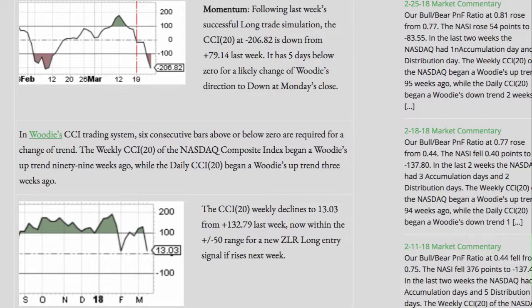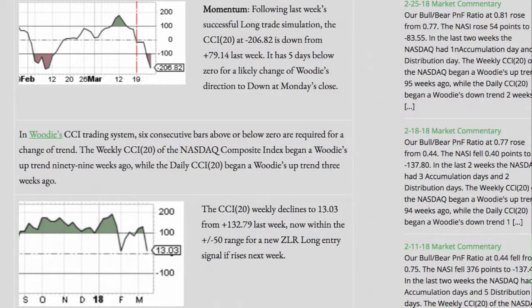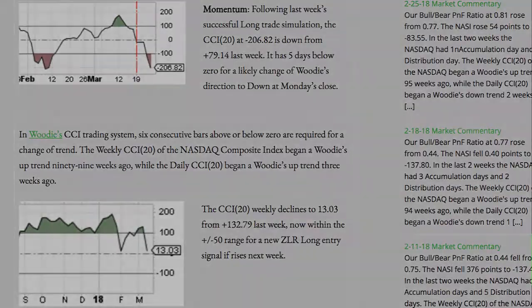The weekly CCI 20 of the NASDAQ composite index began a Woody's uptrend 99 weeks ago, while the daily CCI 20 began a Woody's uptrend 3 weeks ago. The CCI 20 weekly declines to 13.03 from a positive 132.79 last week, now within the plus or minus 50 range for a new zero-line reject long entry signal if the market rises next week.